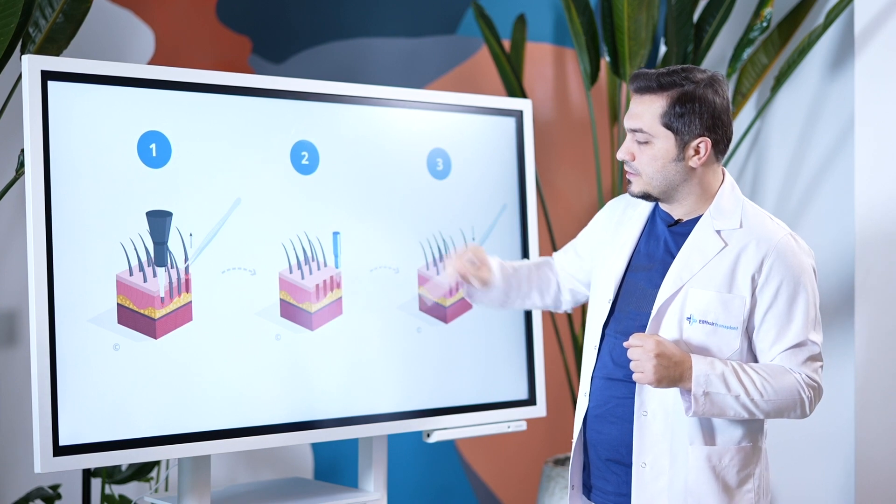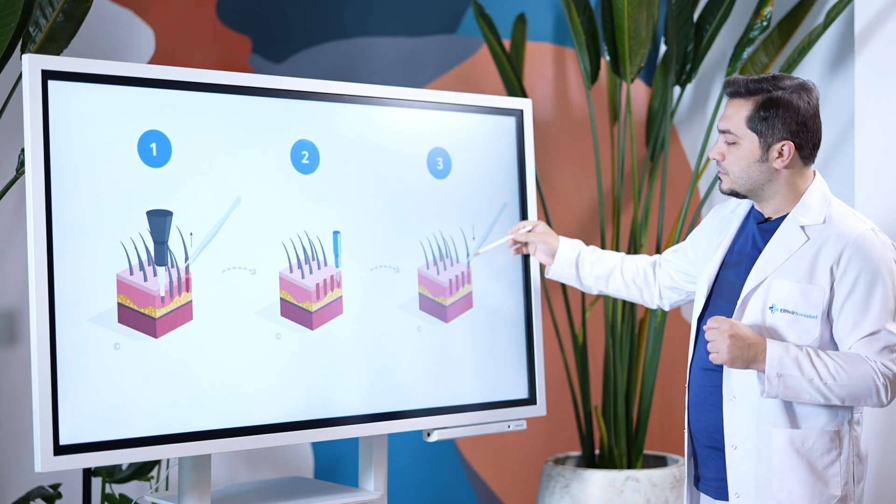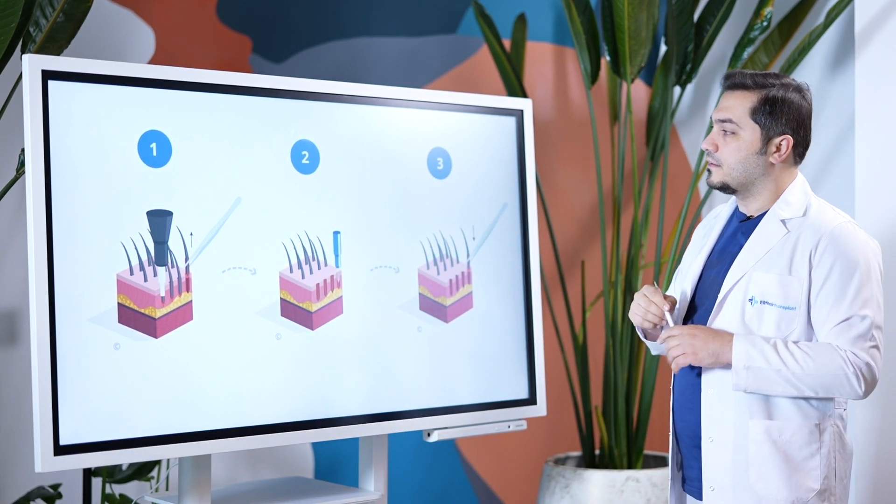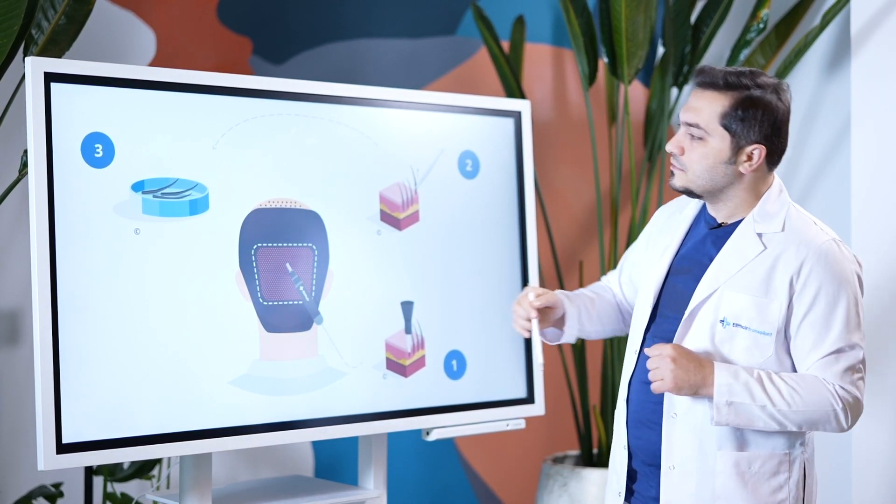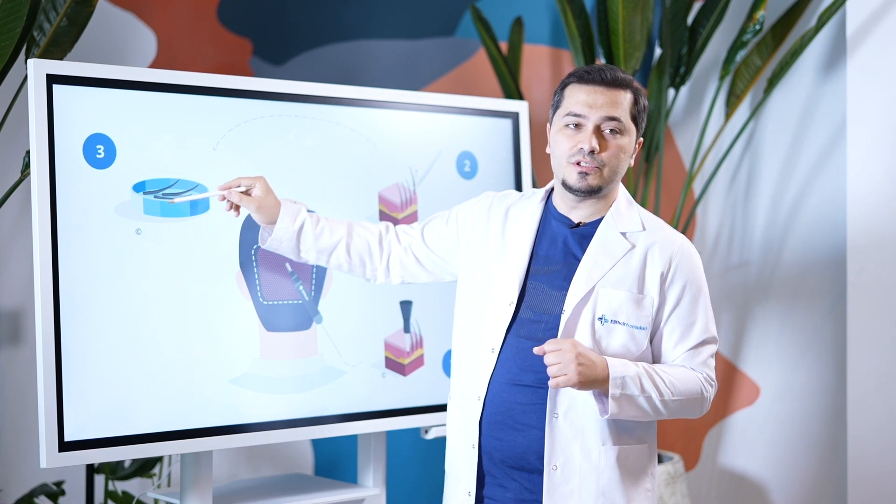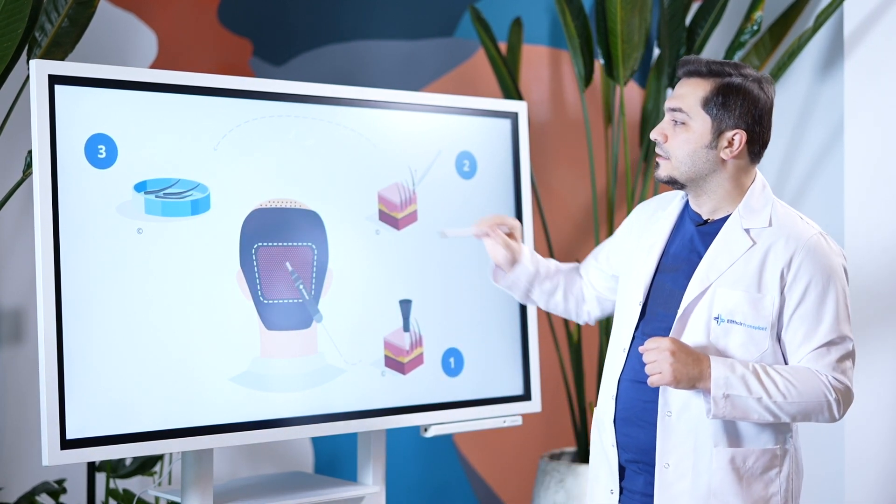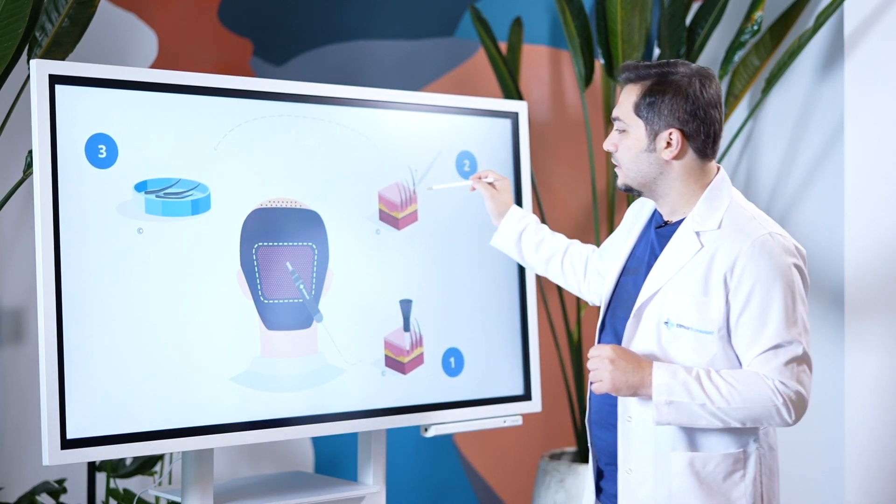Then, V-shaped channels are opened with sapphire tool. Finally, the individual grafts are transplanted into the channels. After the grafts are extracted, they are placed into a special enriched solution. After that, we start the transplantation.